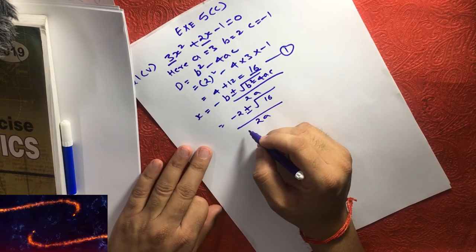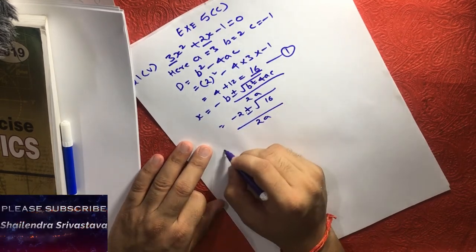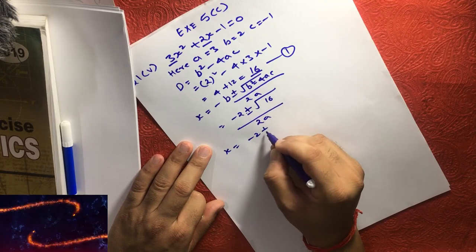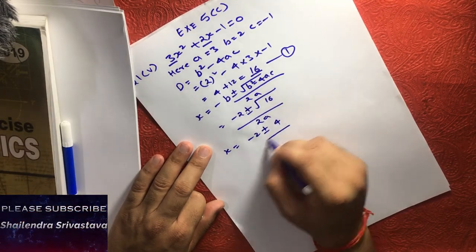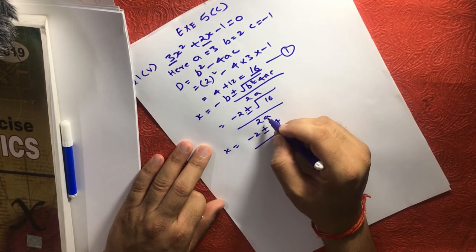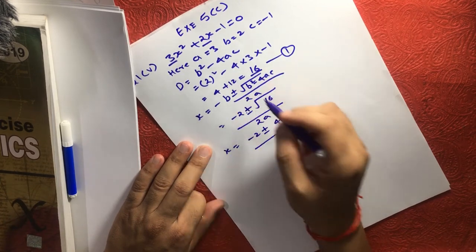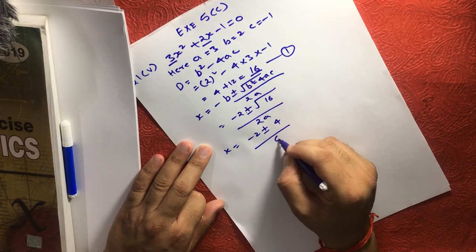Now, if we see, square root of 16 is 4. 4 oblique 2... Sorry, A is 3, so 3 into 2, this will become 6.